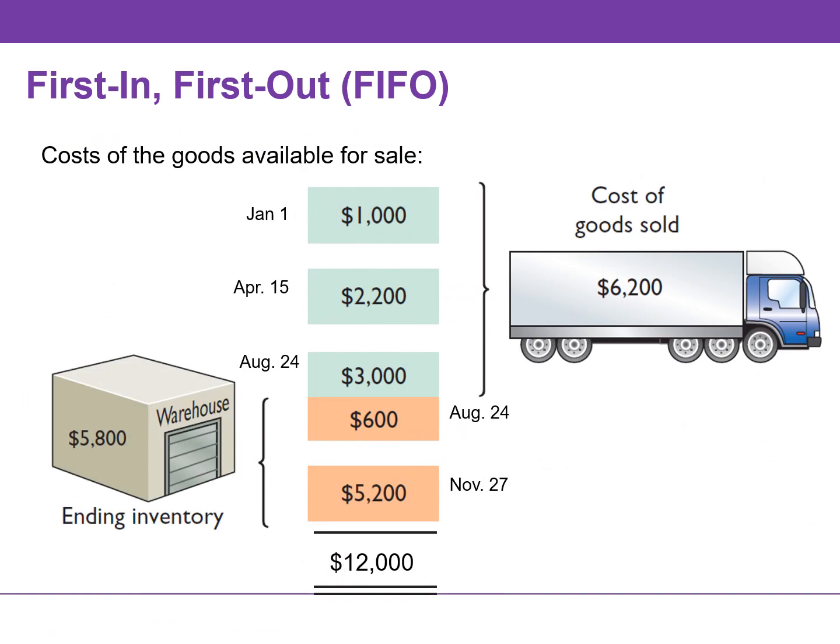Companies can also calculate cost of goods sold by pricing the 550 units sold using the prices of the first 550 units acquired. There were 300 units purchased on August 24th, and only 250 units are assumed sold because 50 of these units were assumed unsold and included in the ending inventory.